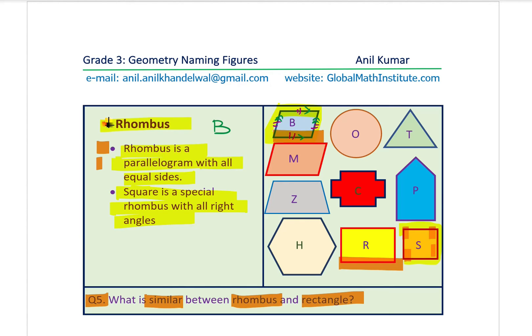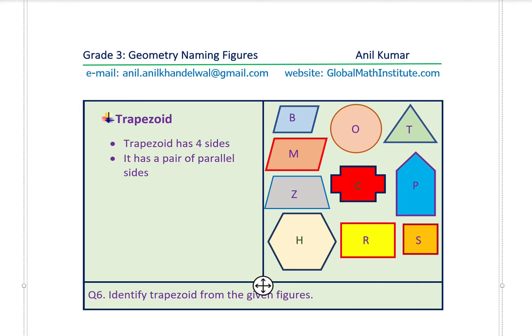Let's move on to the next shape: trapezoid. A trapezoid has four sides but only one pair of parallel sides — that is what makes it a trapezoid. Question number six: identify the trapezoid from the given figures — which of these figures represents a trapezoid?